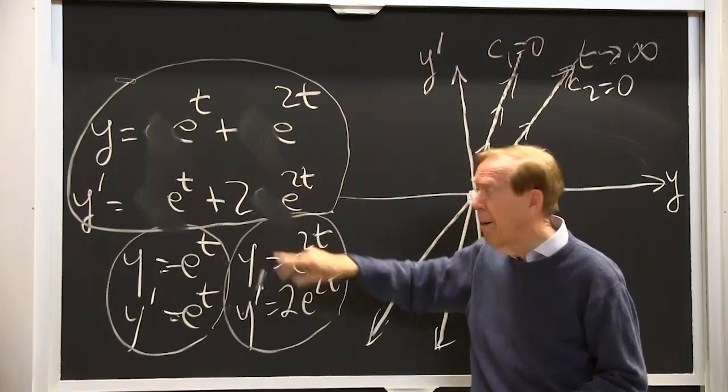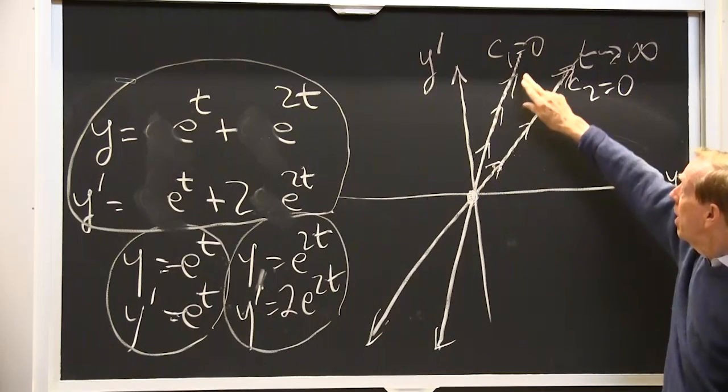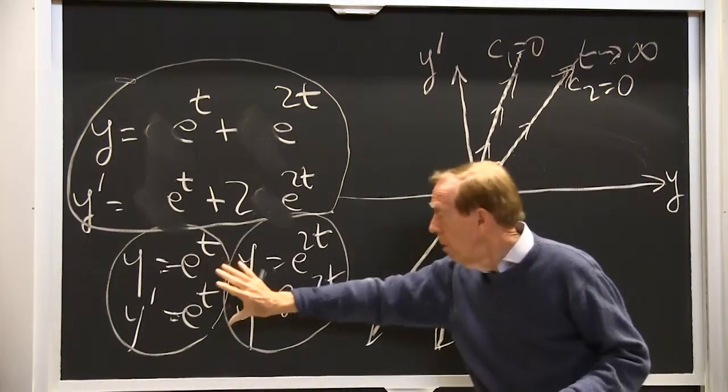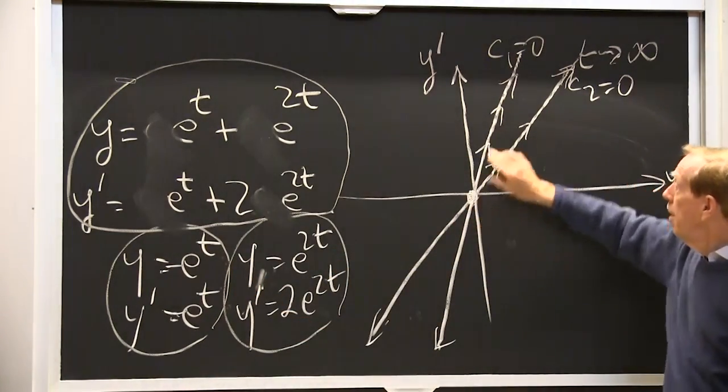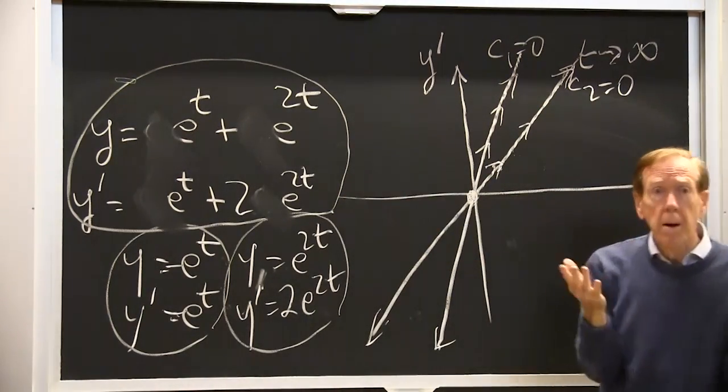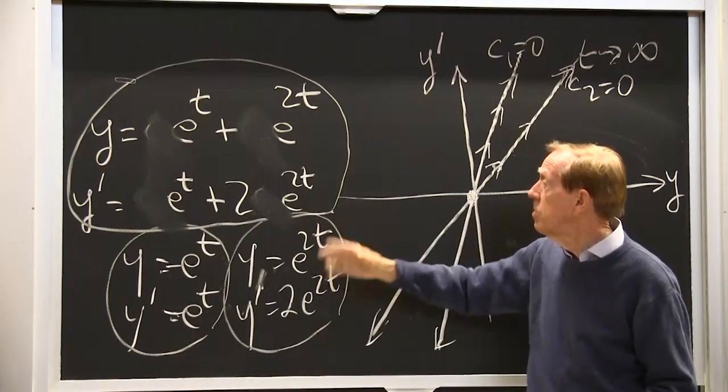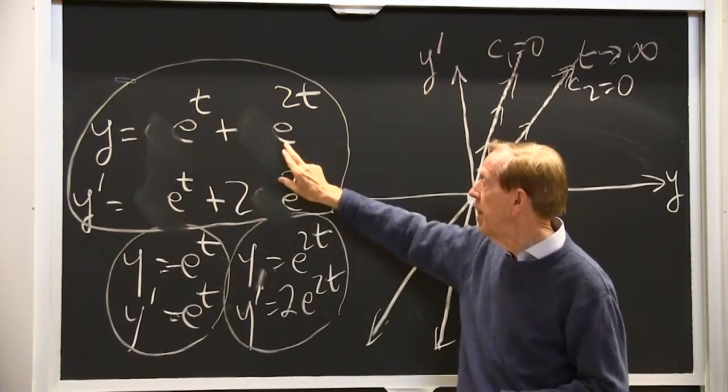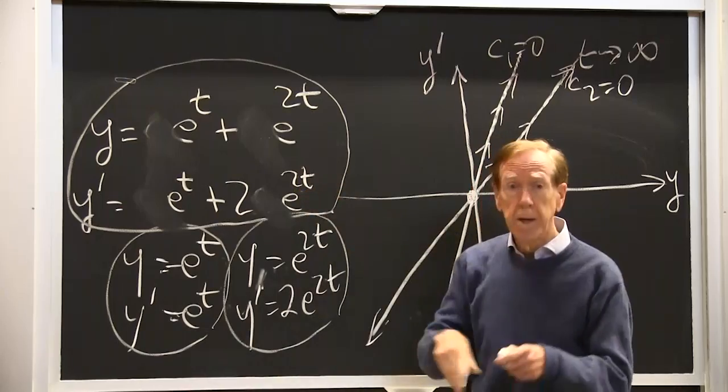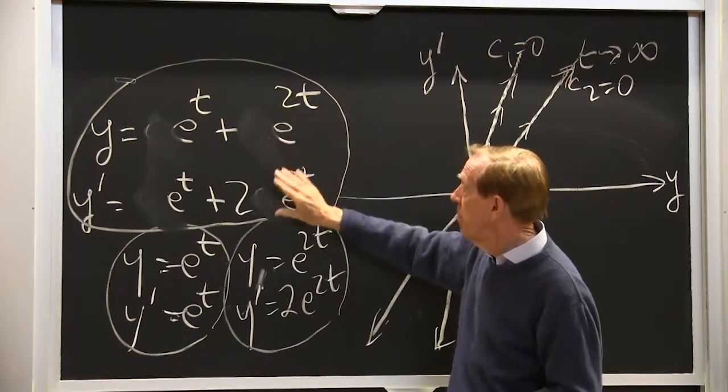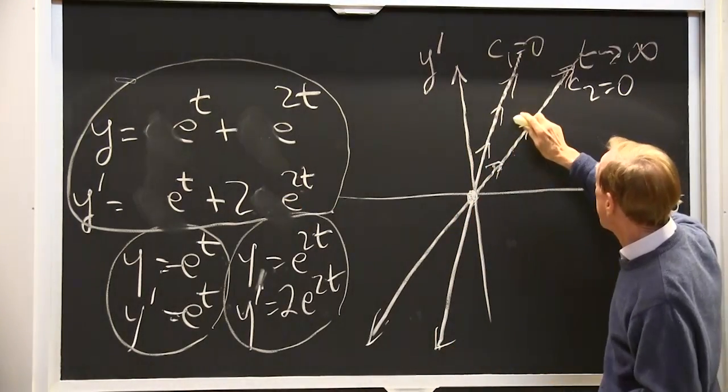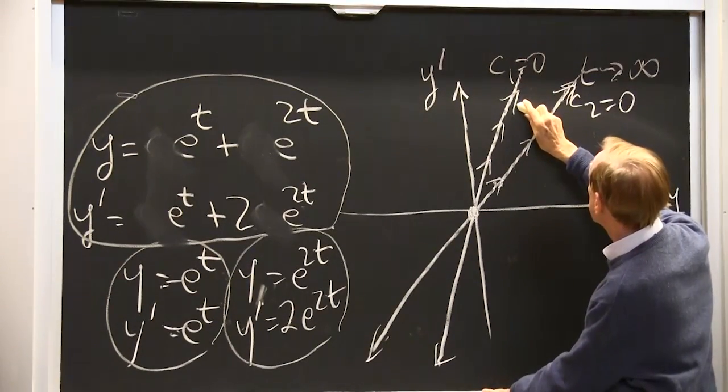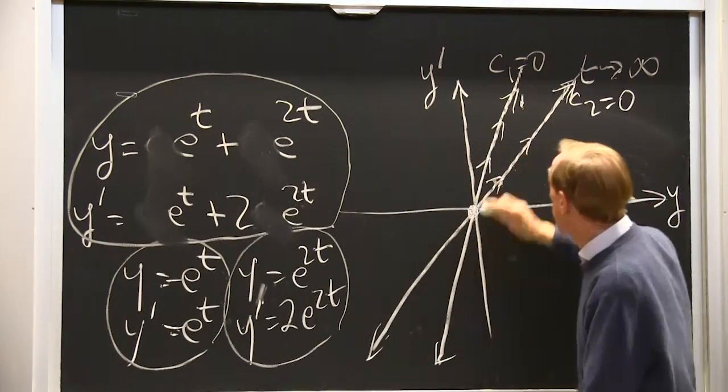As t changes, y will grow, y prime will grow. I'll head out here. But I won't be on that straight line or that straight line, because those were the cases when I had only one of the two solutions. These were the special solutions and now I have a combination. What happens as t goes to infinity? This wins. As t goes to infinity, the e to the 2t is bigger than e to the t. So this is the larger term. This curve will approach closer and closer to the line with slope 2.